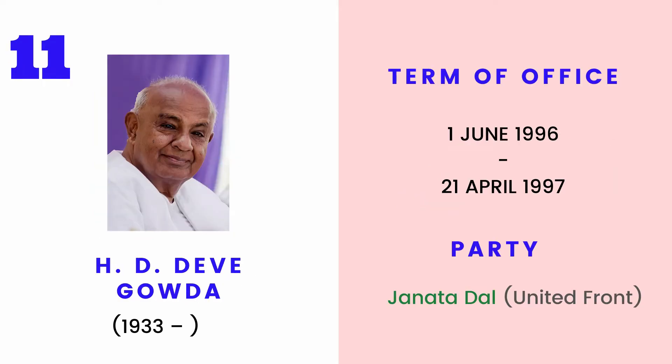HD Deve Gowda was the 11th Prime Minister of India from 1996 to 1997. He was previously the 14th Chief Minister of Karnataka from 1994 to 1996.